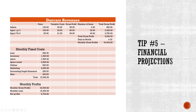First, identify the age brackets you'll serve — infants, one-to-three year olds, three-to-five year olds — and assign a weekly price to each, for example $120/week for infants, $100 for one-to-three, and $90 for three-to-five. Then identify variable costs per child per week — formula, meals, coloring books, crayons. Subtract variable costs from your price to get gross profit per child.